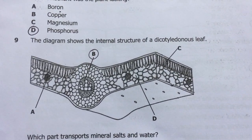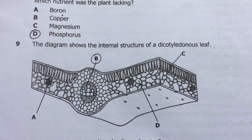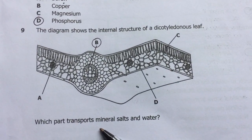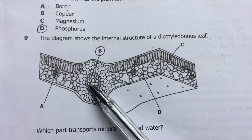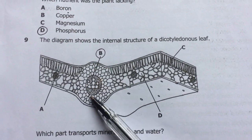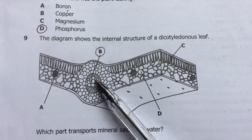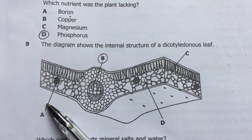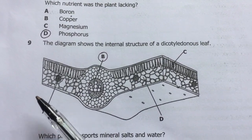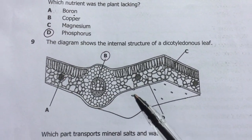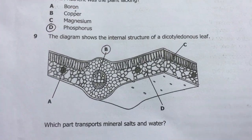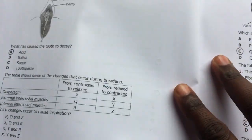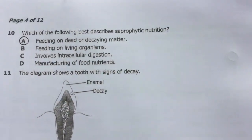Number nine: the diagram shows the internal structure of a dicotyledonous leaf. Which part transports mineral salts and water? Part B — this is the xylem. Below it is the phloem. We can also see the palisade layer, the spongy mesophyll, and veins in the leaf. The answer is B, because xylem is on top and phloem is below.